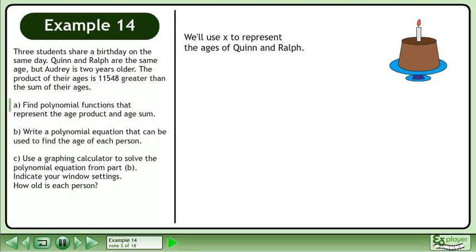We'll use x to represent the ages of Quinn and Ralph. Audrey is two years older, so her age is x plus 2.